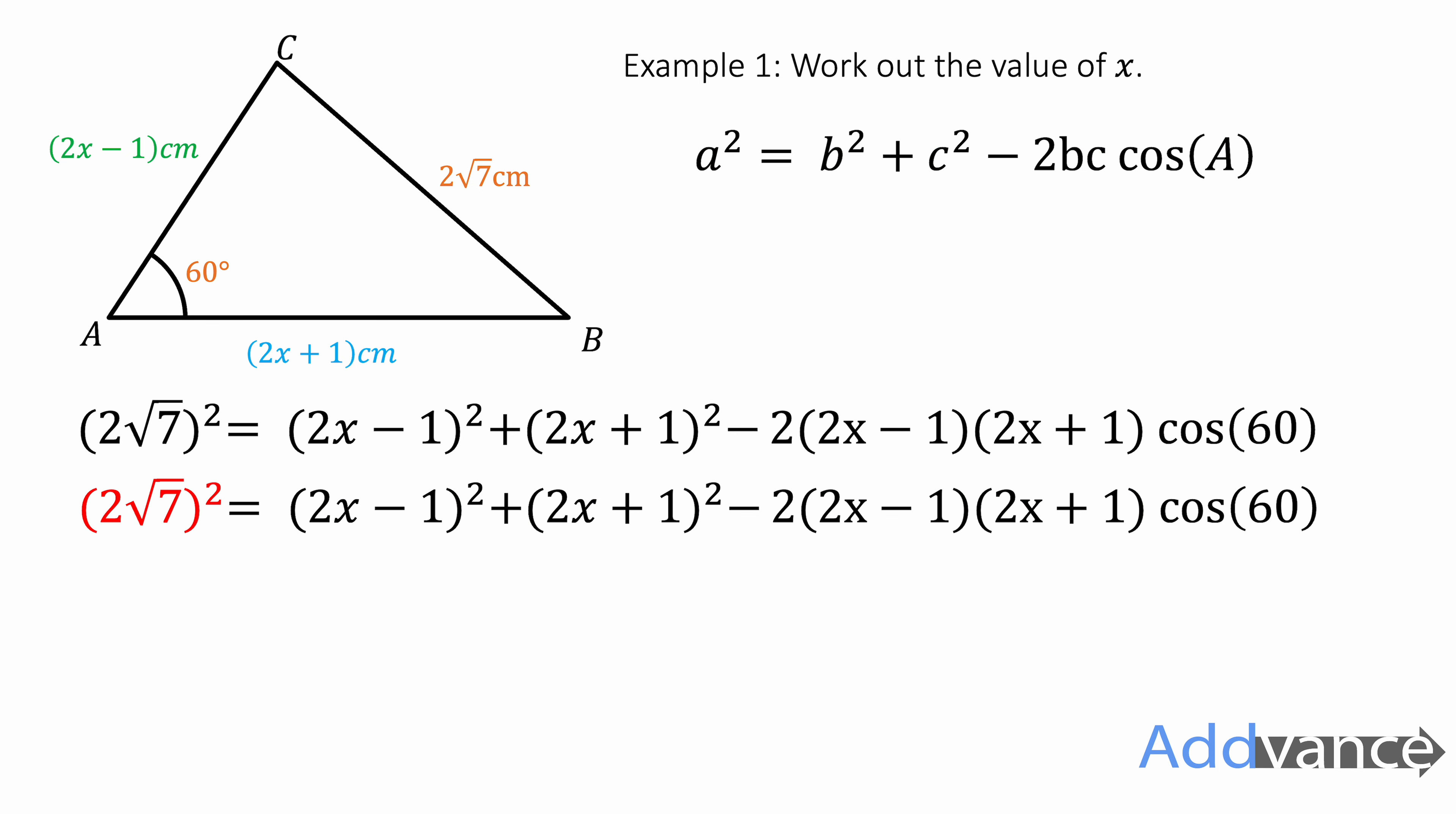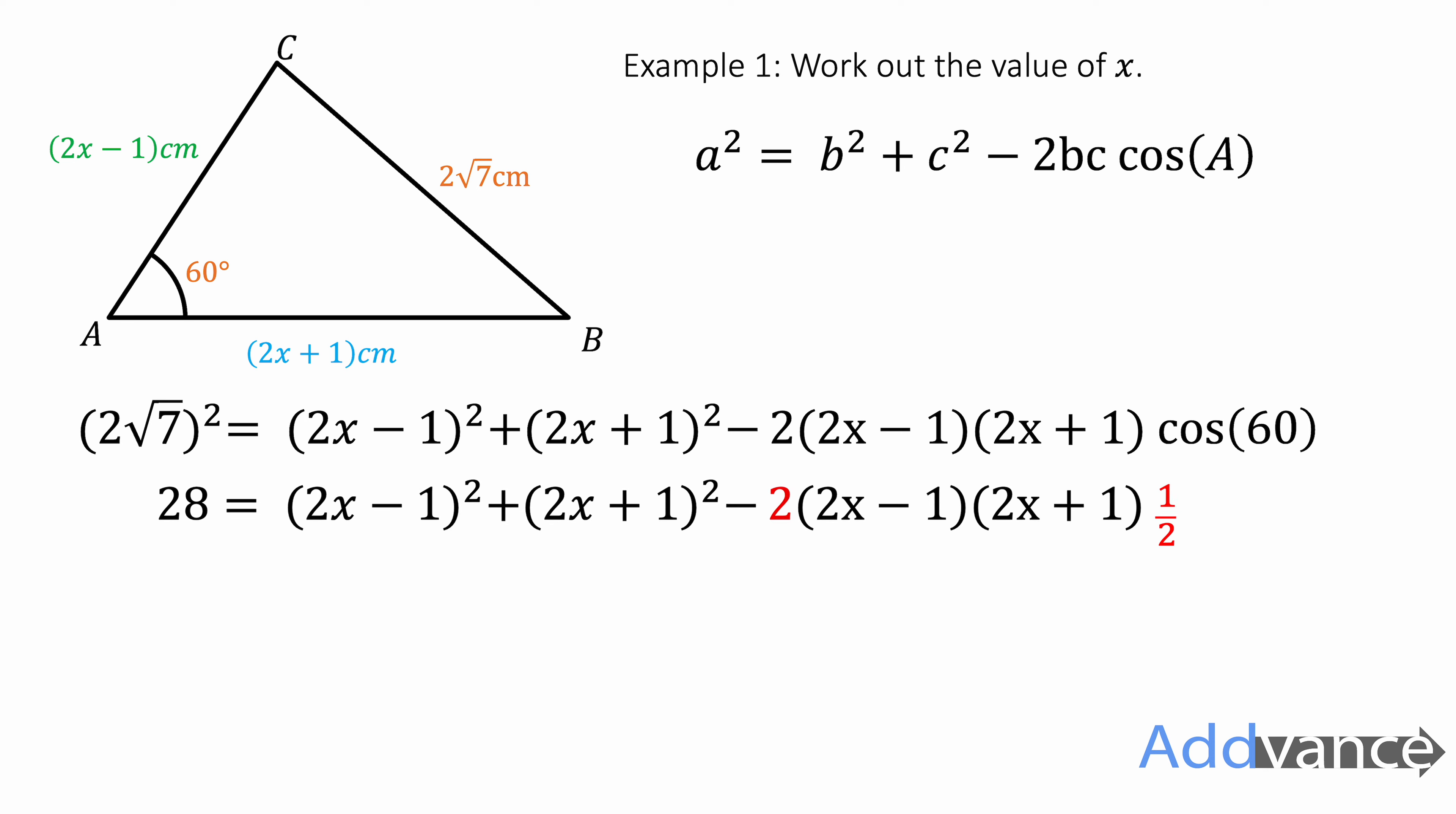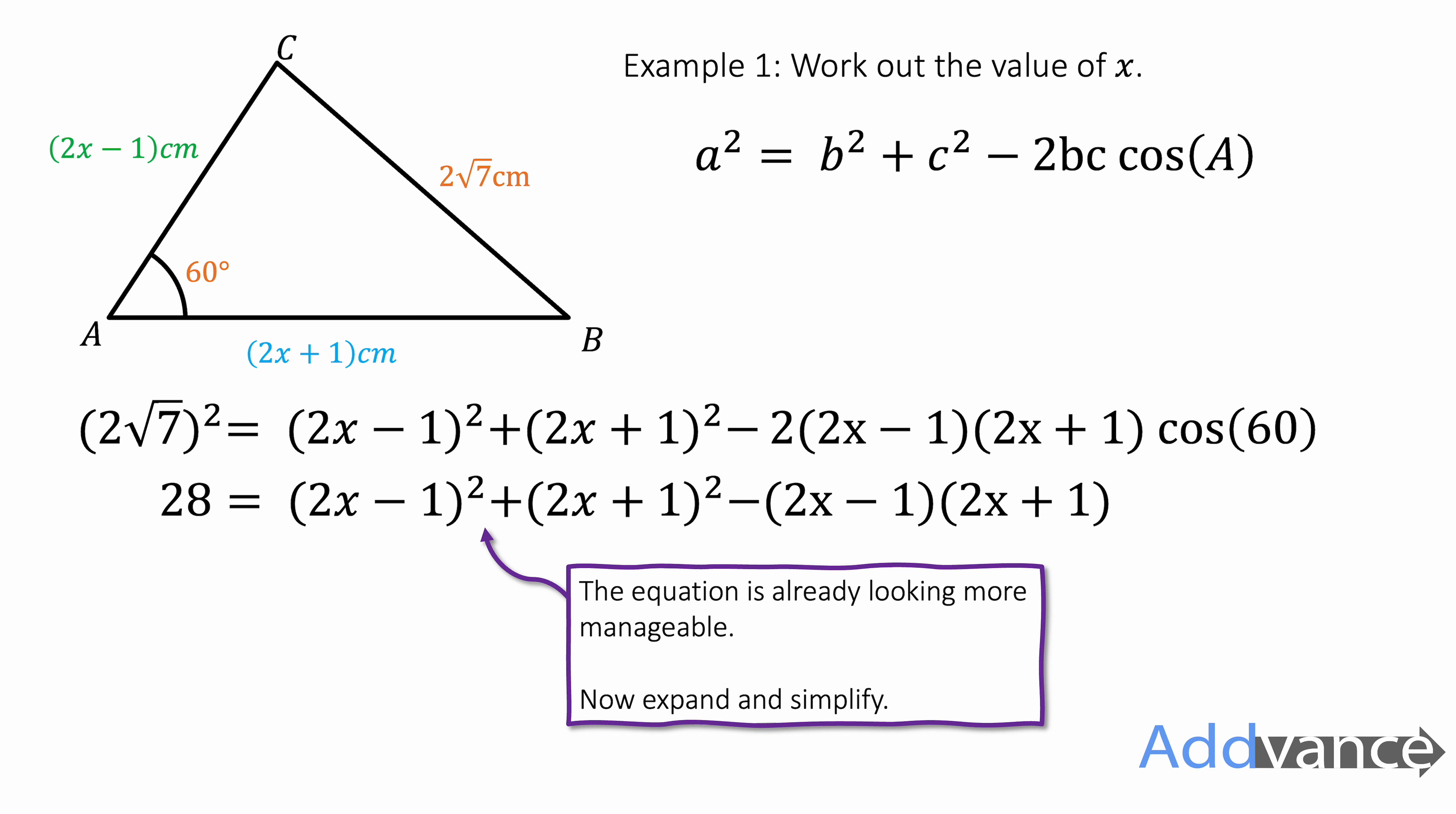Let's start with the 2 root 7 squared. On a calculator that is just 28. Now I've also got cos 60 here and cos 60 is 1 half. So we can replace the cos 60 with 1 half. This is quite common in questions like this where you will see the angle is labelled 60 degrees because cos 60 is such a simple answer.